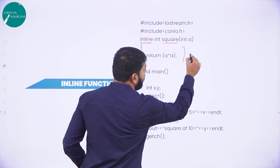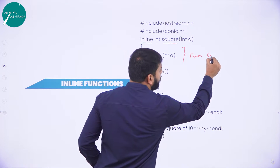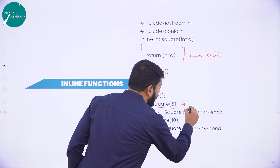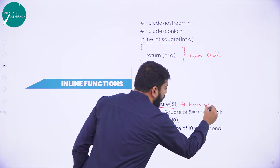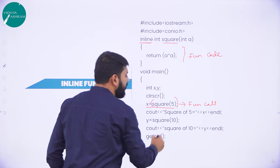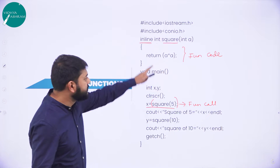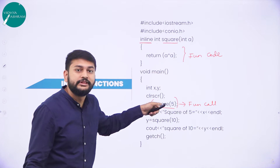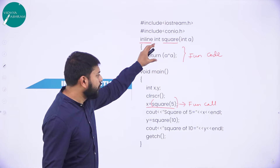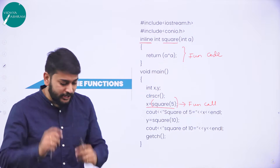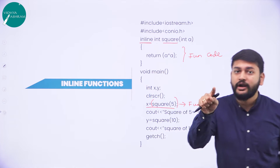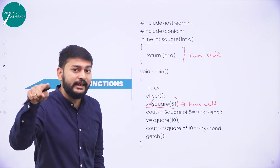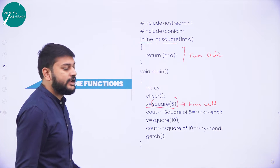Let's go to the program to understand this. This is what I call the function code. This statement is what I call the function call. The entire code inside this function will get replaced with this function call statement. What is the meaning of it? My entire function is in one line. That is why I call it inline — the entire function is in one line.